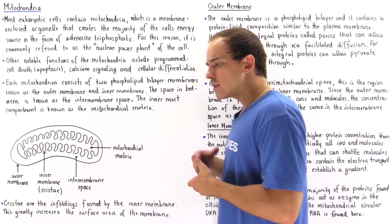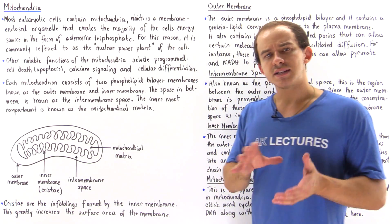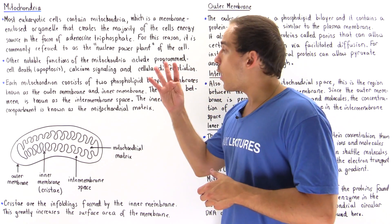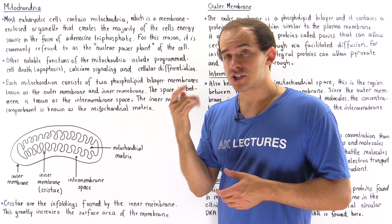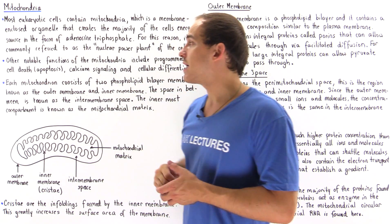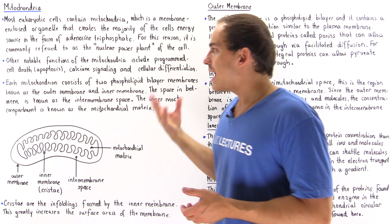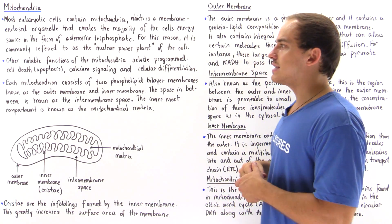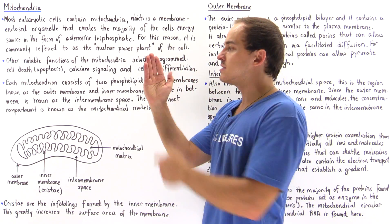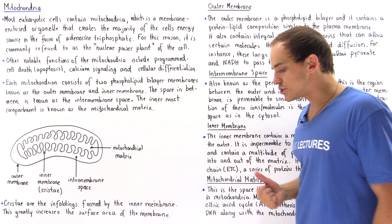When would apoptosis be useful? When we discuss embryology, we will see that the way we form our fingers on the hand is a result of the mitochondria being capable of killing off cells through apoptosis. The ability to create our five fingers is a result of this process.